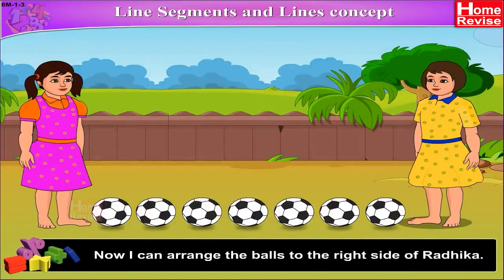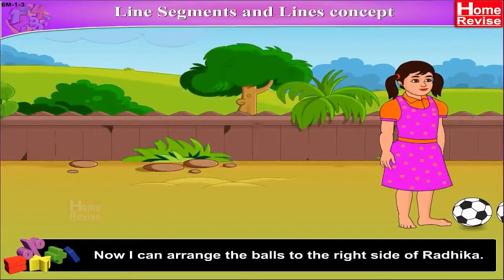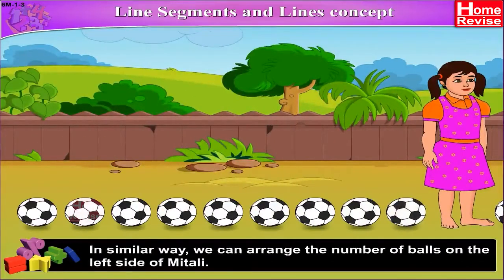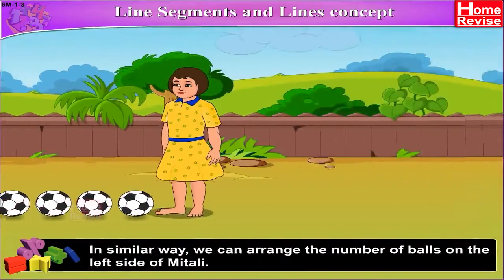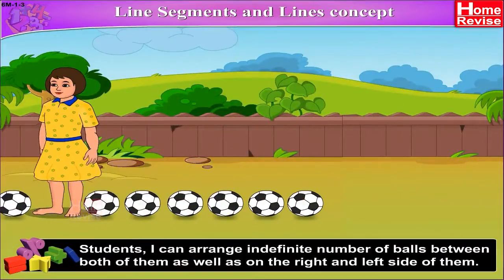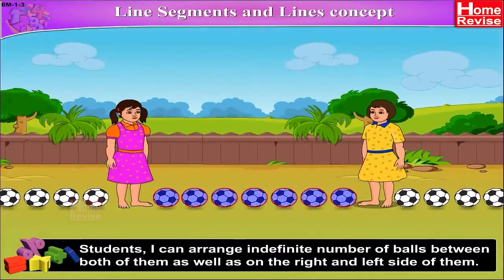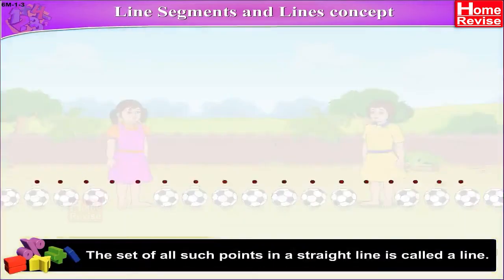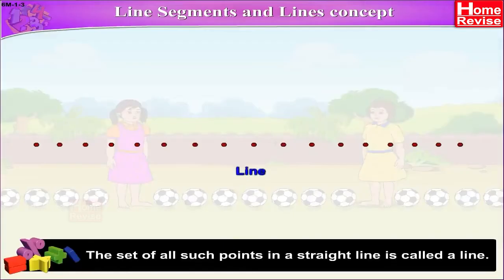Now, I can arrange the balls to the right side of Radhika. In a similar way, we can arrange the number of balls on the left side of Mitali. Students, I can arrange an indefinite number of balls between both of them as well as on the right and left side of them. The set of all such points in a straight line is called a line.